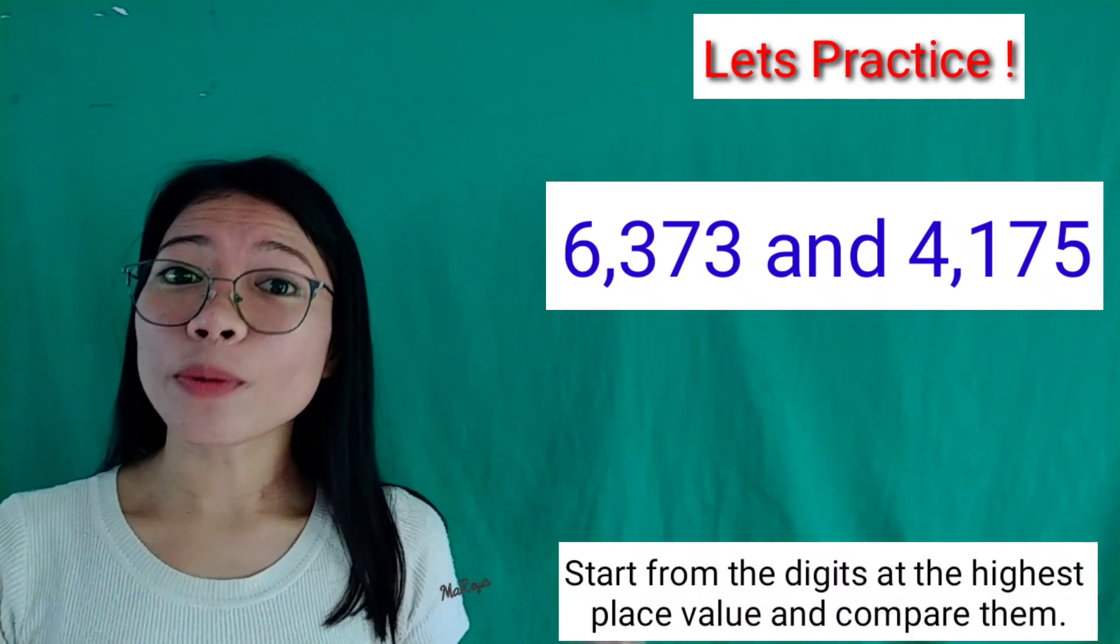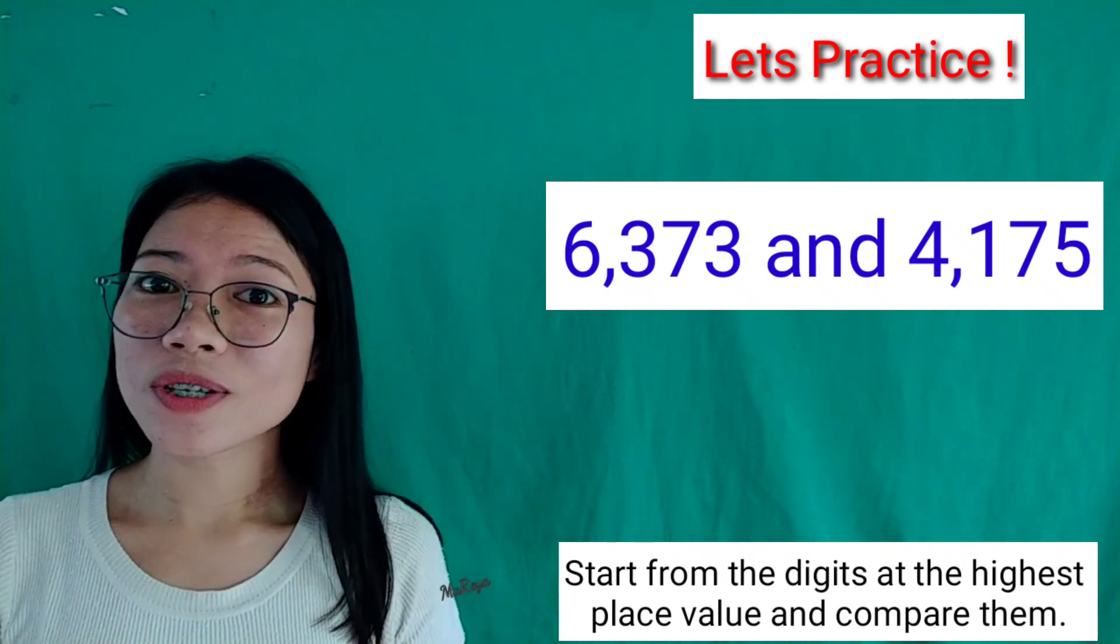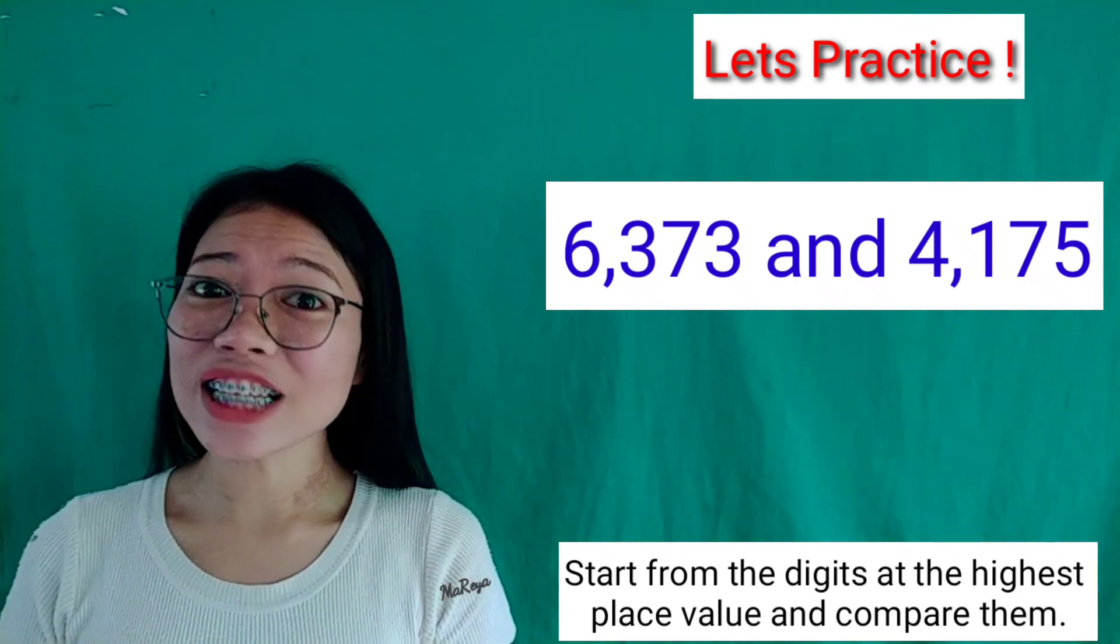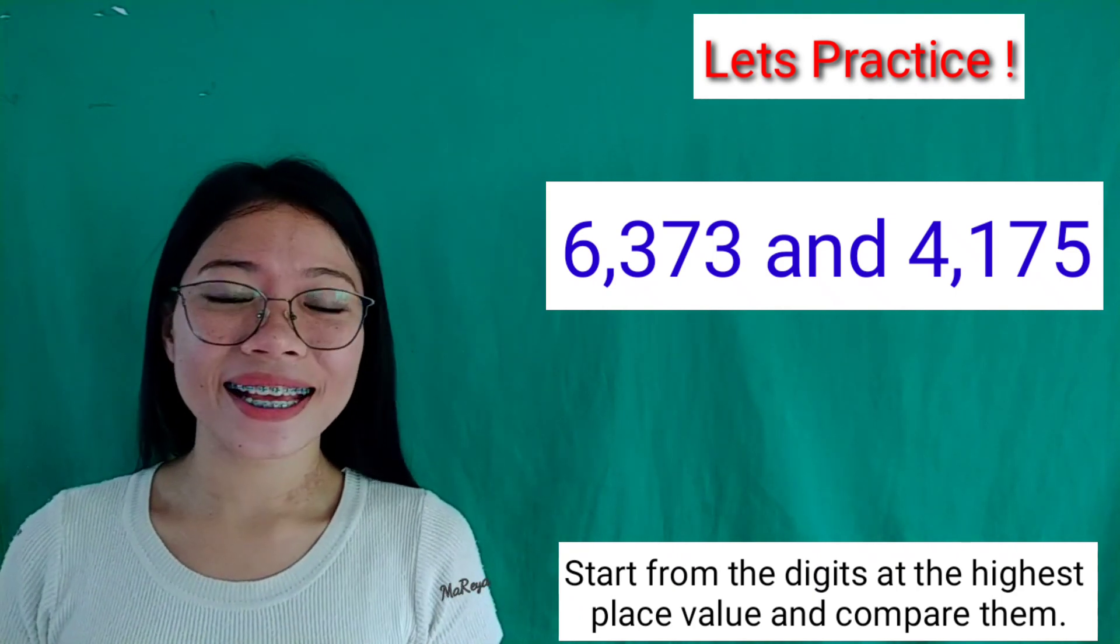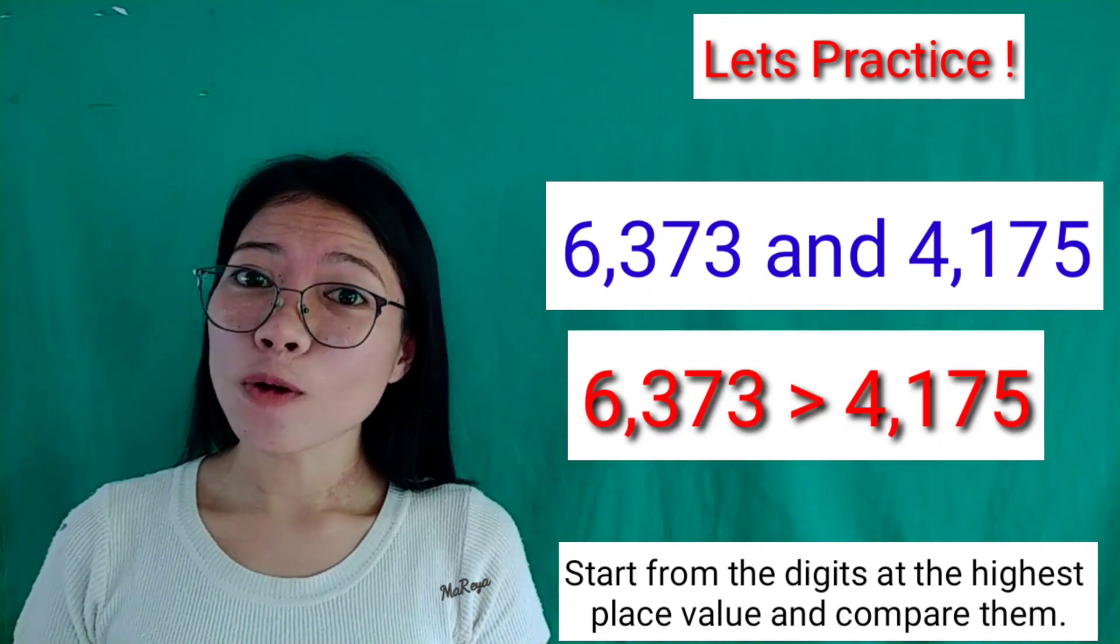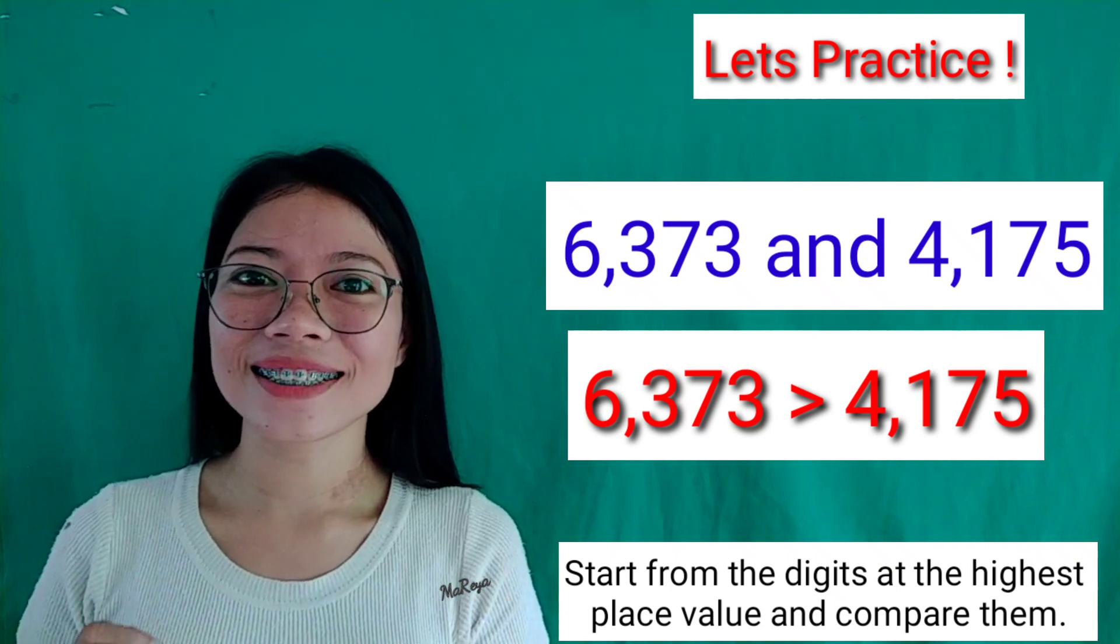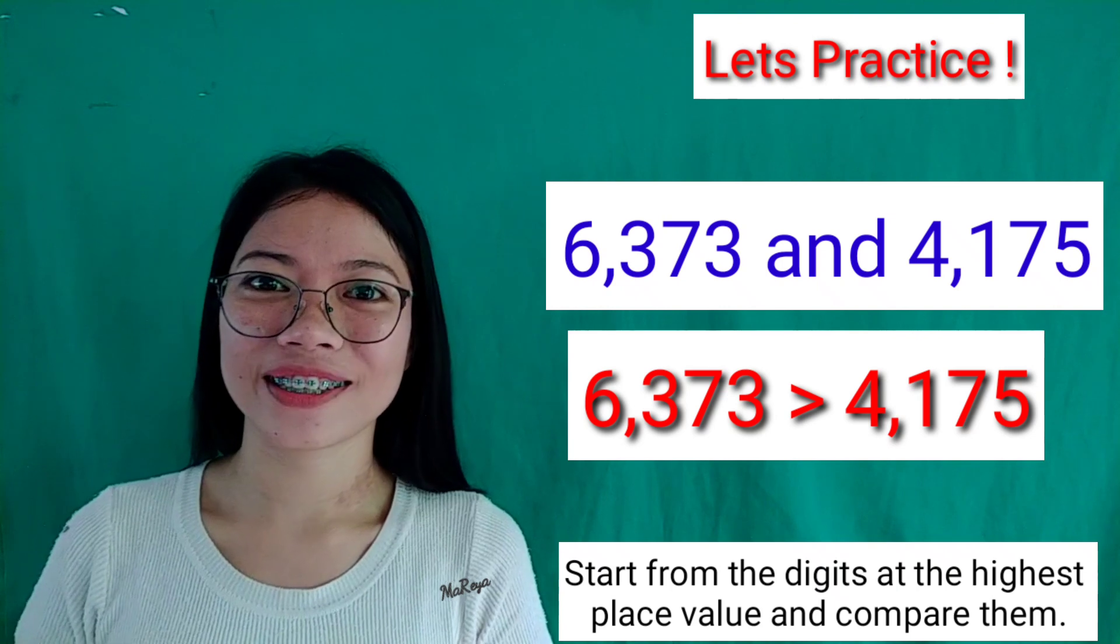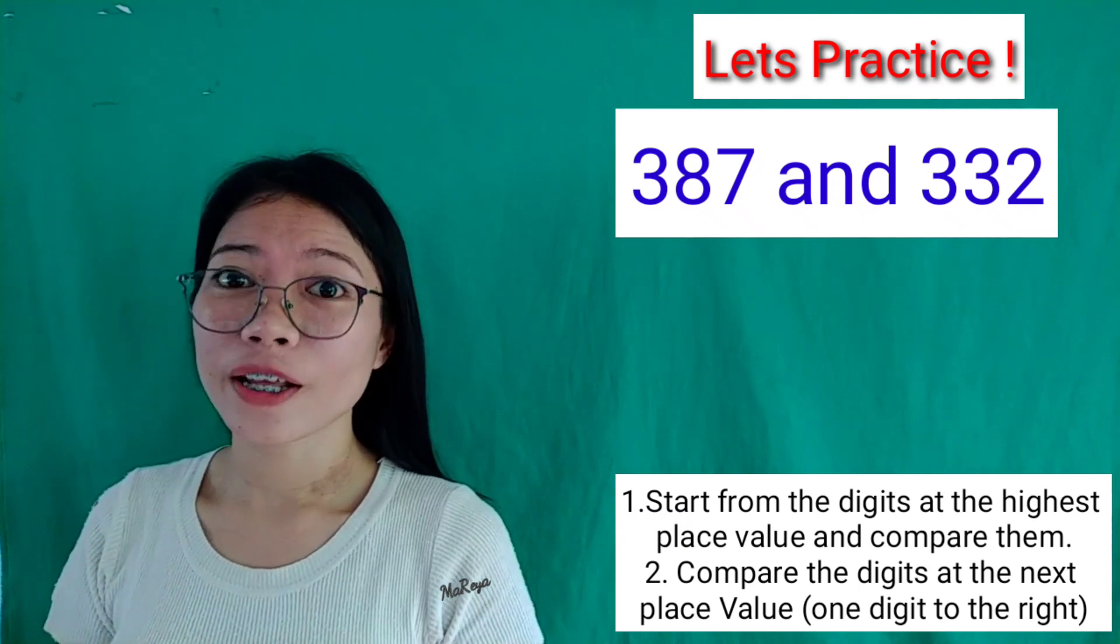Let's try to compare these digits: 6,373 and 4,175. So, which digit is greater? Yes, digit 6 is greater than 4. So, 6,373 is greater than 4,175.